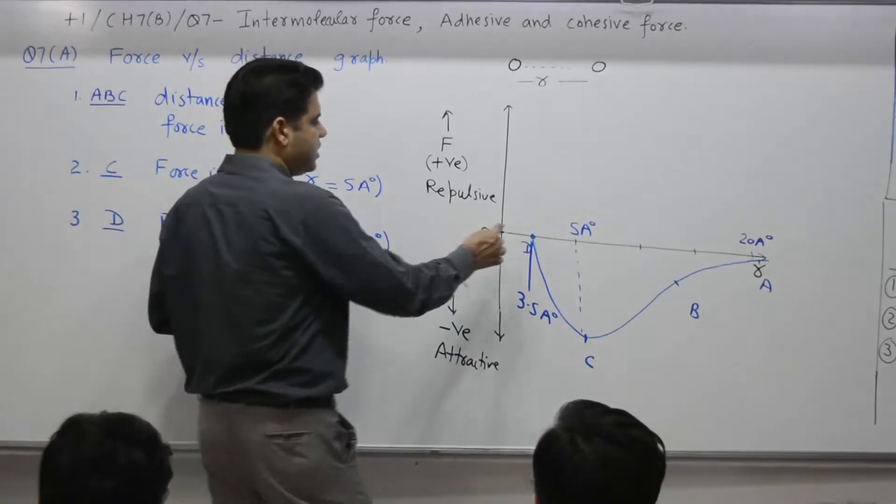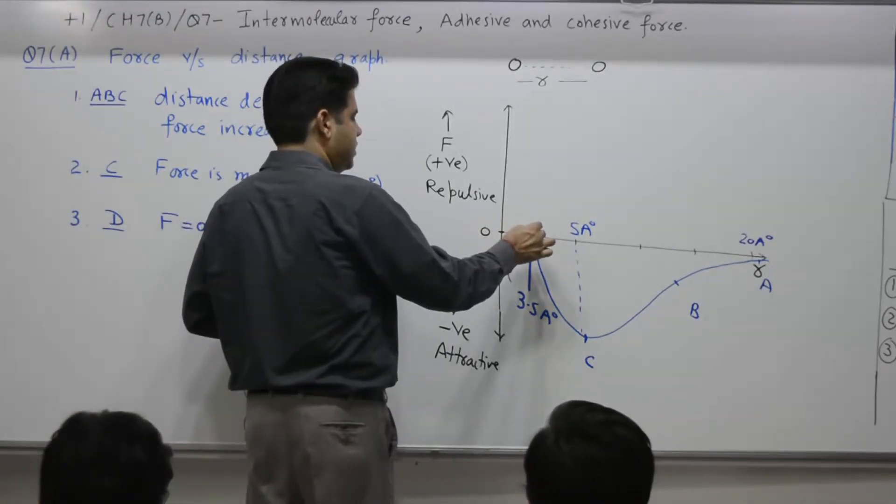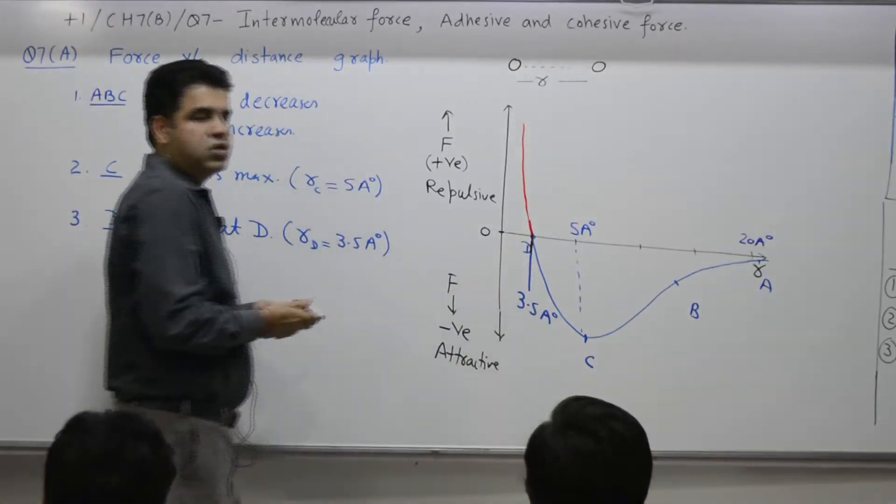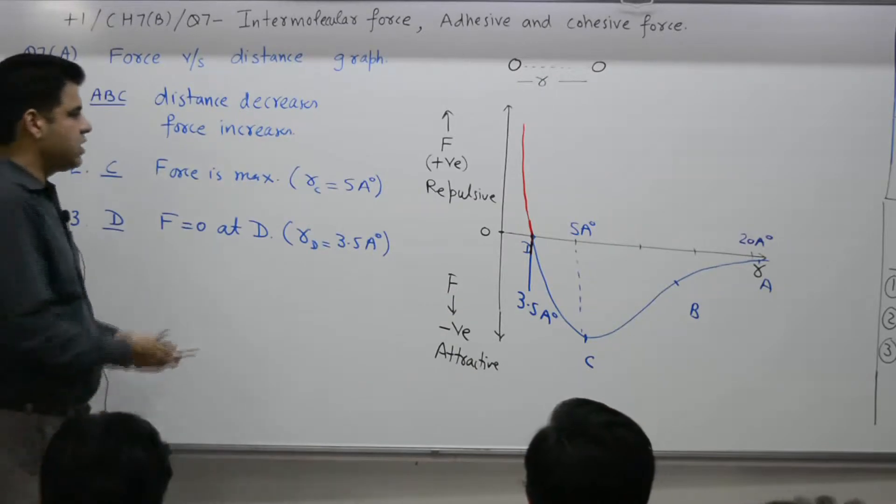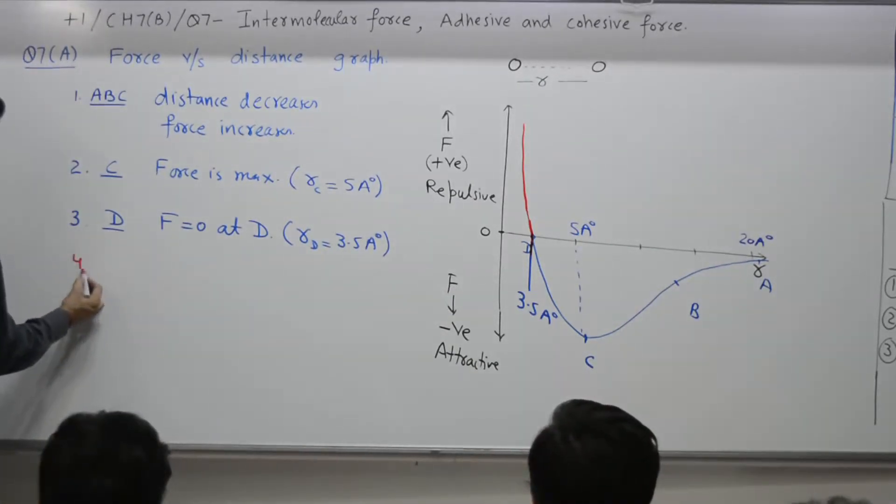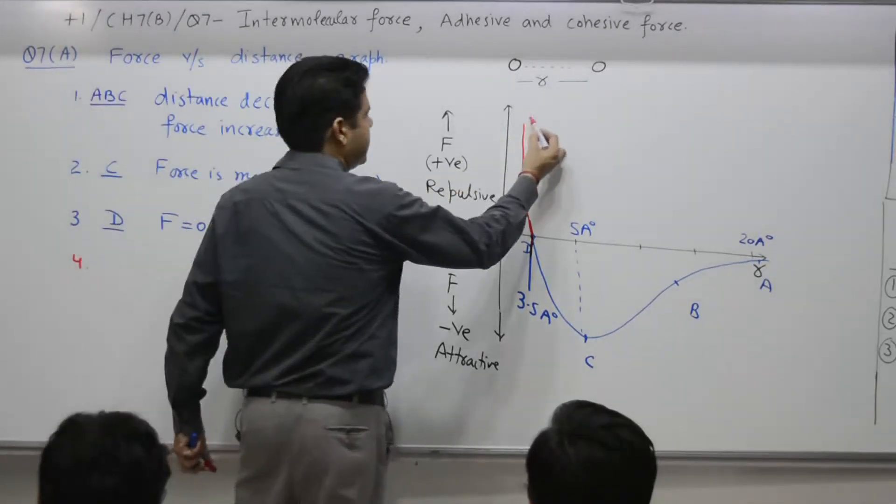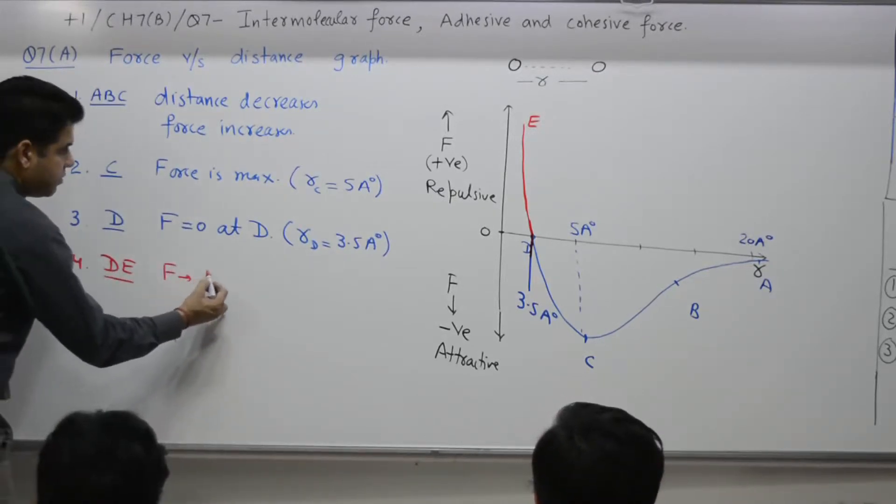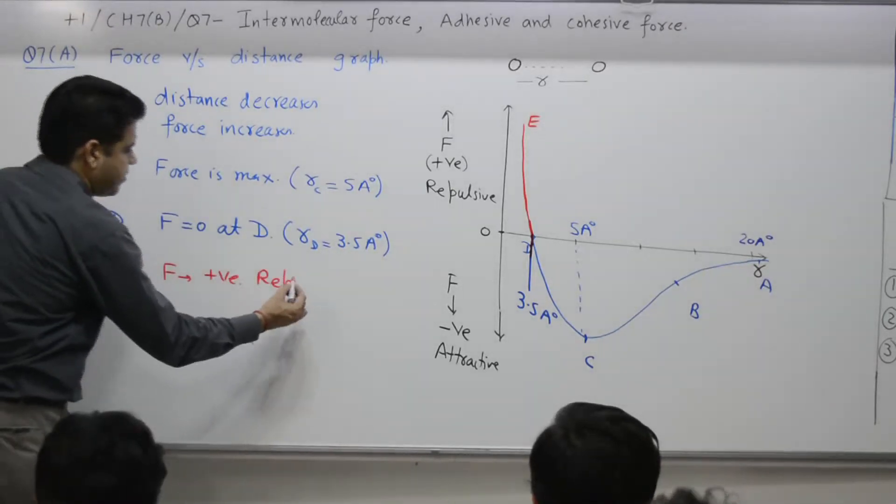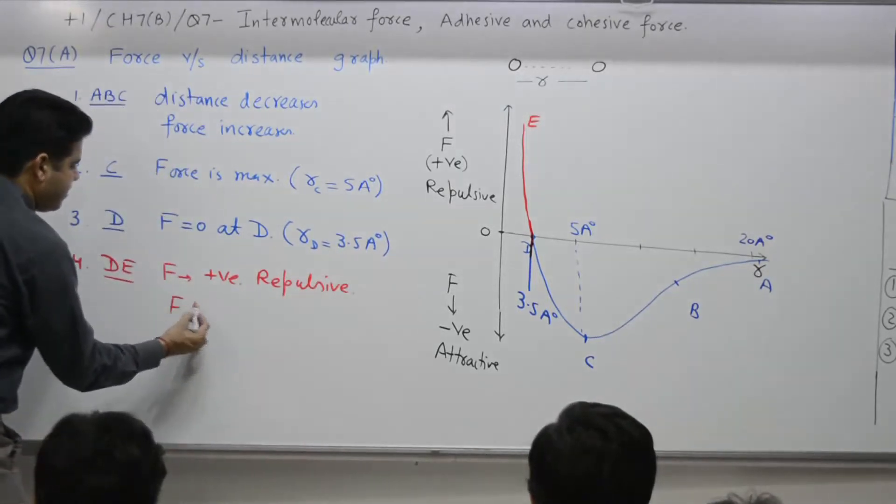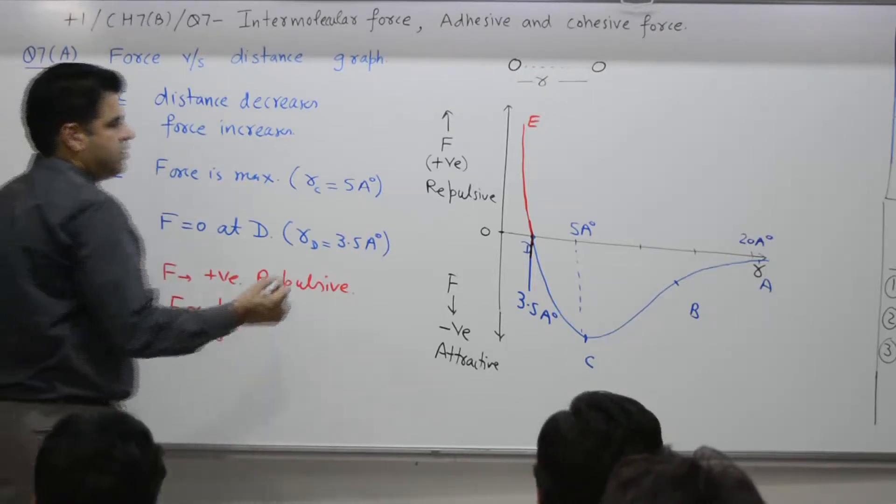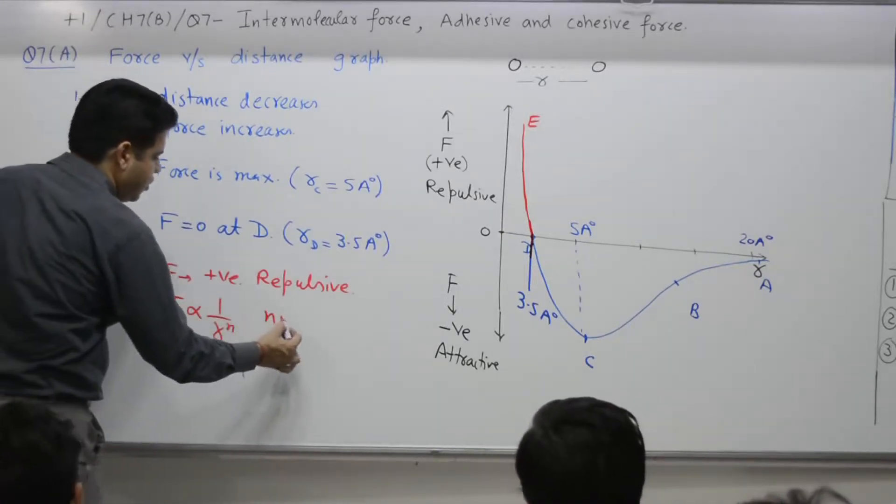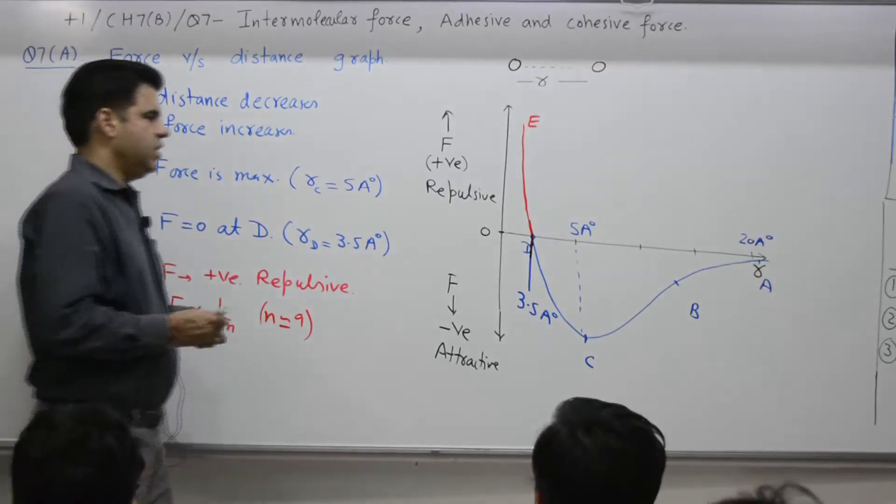If you try to further decrease it, there is too much effect. If you further try to decrease it, a small change in distance causes too much change in force, and the force is repulsive. At D to E, force is positive, repulsive, and F is inversely proportional to r to the power n. You try to decrease this, r decreases, force increases too much. N is of the order of 9, all values 7, 8, 9 are acceptable.